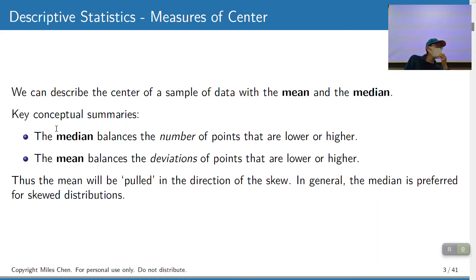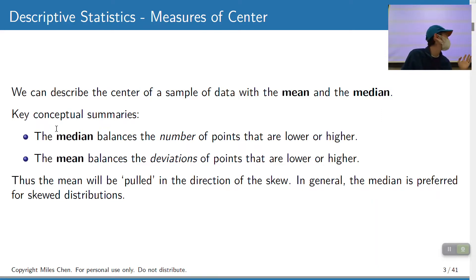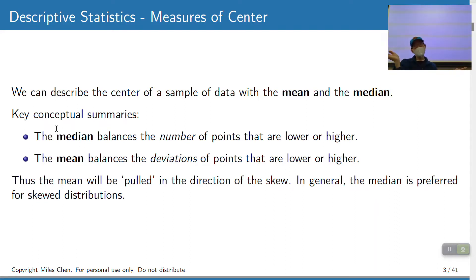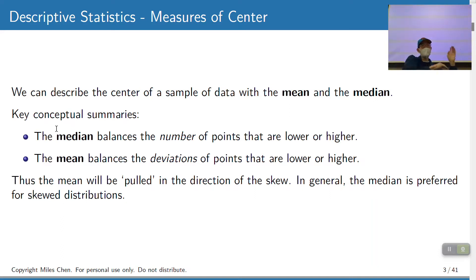We're going to do descriptive statistics — describing the center and spread and things like that. We describe the center using the mean and the median. Conceptually, the mean is you add the numbers up and divide by how many you have, and the median is you sort them and go to the middle. But if you think about why these values are the center, it's because they balance things on one side and the other side.